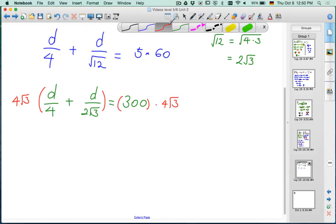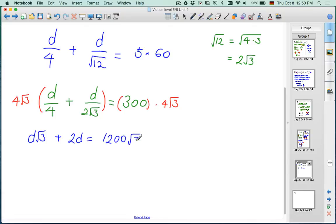So let's go ahead and do that. 4 is going to simplify into 1, so d times root 3 plus 4 root 3 times d over 2 root 3, so I'll get 2d. The root 3s cancel and 4 over 2 leaves us with 2. And here I have 1,200 root 3.